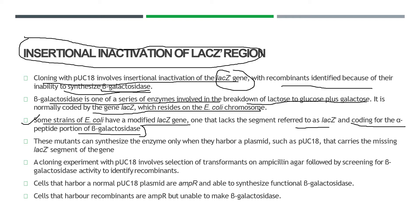These mutants can synthesize the enzyme only when they harbor a plasmid such as pUC18. The lacZ region is present in pUC18 and thus beta-galactosidase synthesis and breakdown can happen. Without the presence of a plasmid, these activities won't be possible. Cloning experiments with pUC18 involve selection of transformants on ampicillin agar followed by screening for beta-galactosidase activity to identify recombinants.